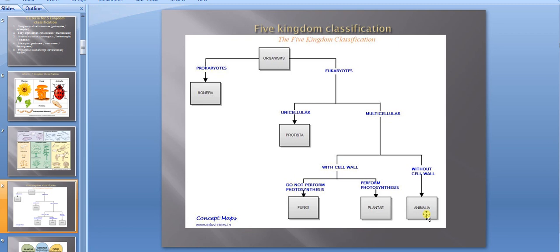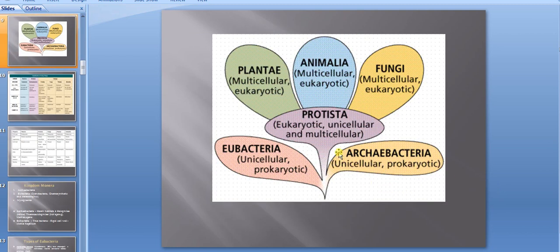If I ask you which is the only prokaryotic kingdom, the answer is Monera — that is correct, only Monera is prokaryotic. In eukaryotes we include Protista, Fungi, Plantae, and Animalia. Protista are generally unicellular but can also be multicellular. Multicellular with cell wall are Fungi and Plantae, and without cell wall is Animalia.